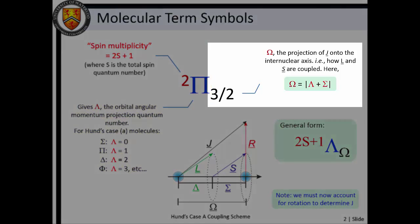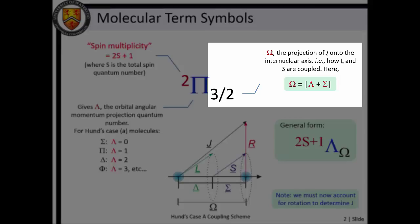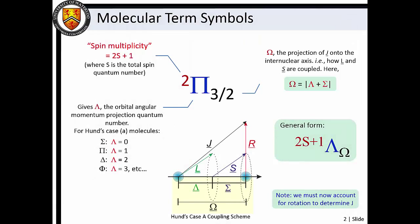The subscript gives omega, which is the quantum number that describes the projection of the total angular momentum onto the internuclear axis. Omega also describes how lambda couples with sigma, the quantum number that describes the projection of the total spin angular momentum onto the internuclear axis.